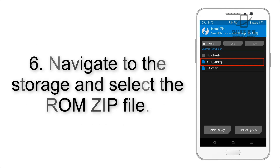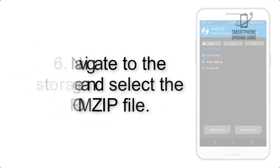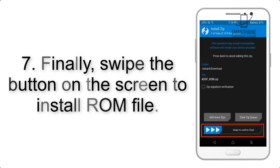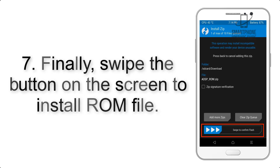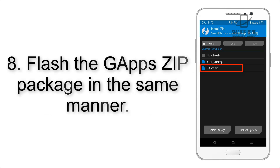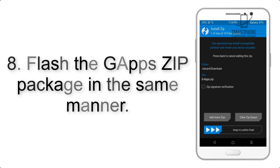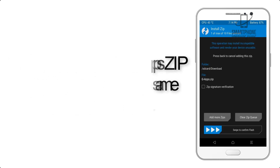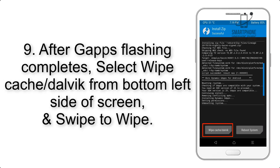Step 5: Go back to the recovery main screen and tap on the Install button. Step 6: Navigate to the storage and select the ROM zip file. Step 7: Finally, swipe the button on the screen to install the ROM file.